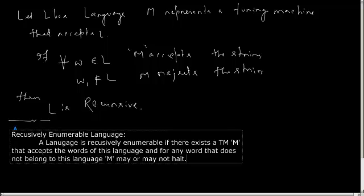If the machine halts for a string that does not belong to L, it will reject that string, meaning that word belongs to a recursive language. Recursively enumerable language also contains recursive language, because if the Turing machine halts, that word becomes part of a recursive language — since there exists a Turing machine which always halts for that language.